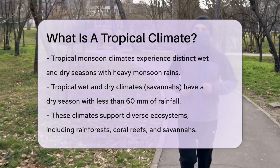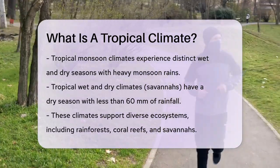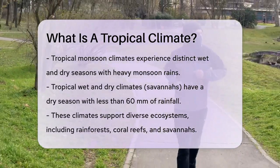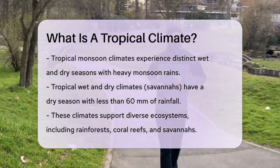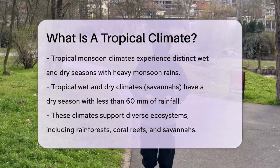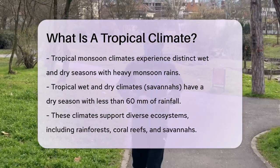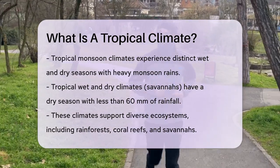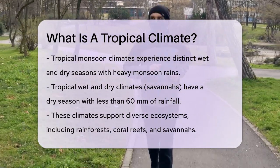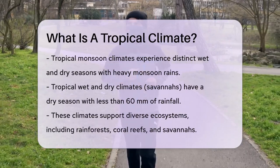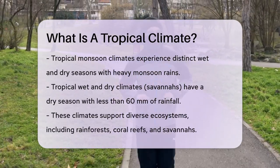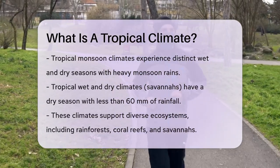Tropical climates support some of the most diverse ecosystems on Earth, including lush rainforests, coral reefs, and savannas. The constant warmth and high humidity create an environment where vegetation thrives, and the transpiration from plants contributes to the high levels of humidity.